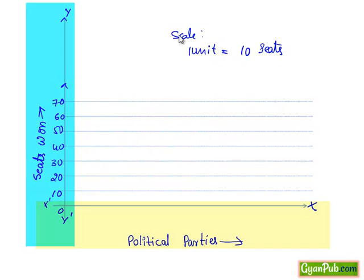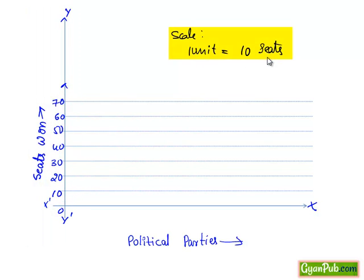And here the scale on the y-axis, for one unit it is 10 seats. And here we take the incremental of 10 for each line.